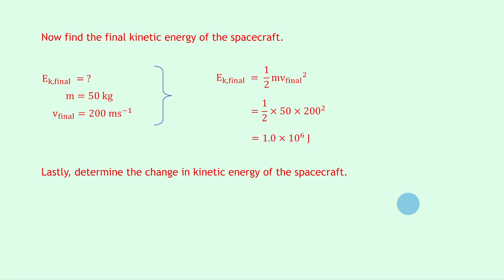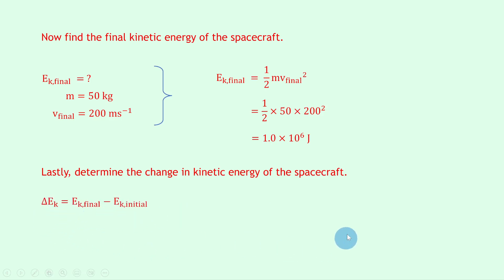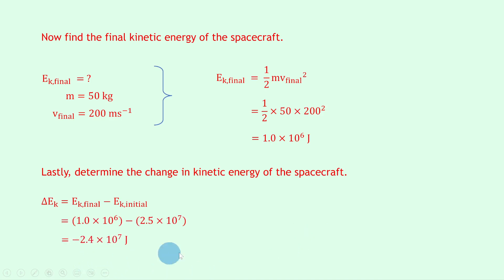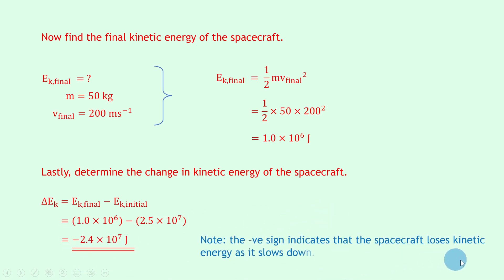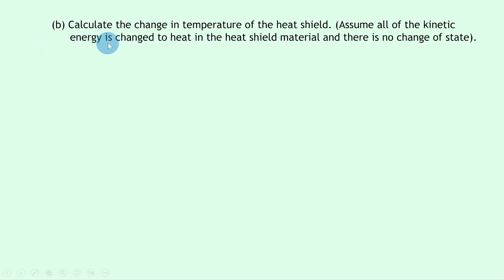Lastly, we were asked to determine the change in kinetic energy of the spacecraft. Now that we have the final and initial kinetic energies, we take the final minus the initial: ΔEK = EK_final − EK_initial. Substituting in: 1.0×10⁶ − 2.5×10⁷ gives an answer of −2.4×10⁷ joules. Don't worry about the negative sign — that just indicates the spacecraft loses kinetic energy as it slows down, so it makes sense for the change to be negative.